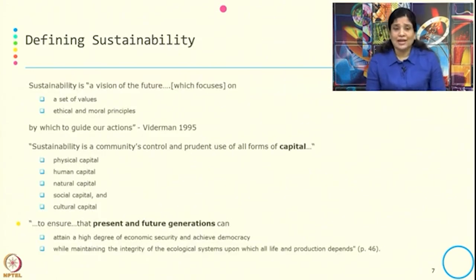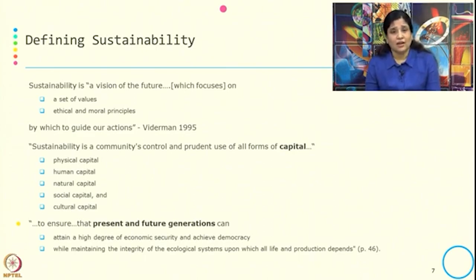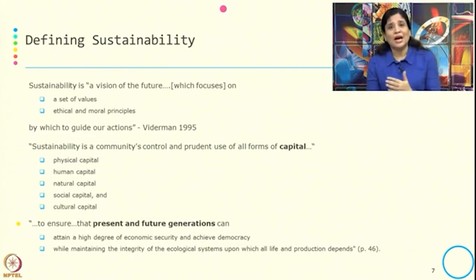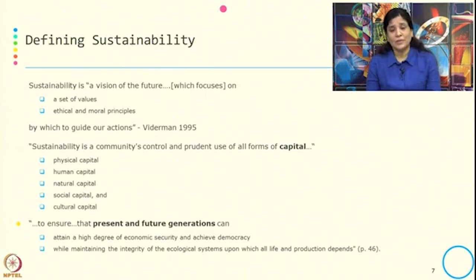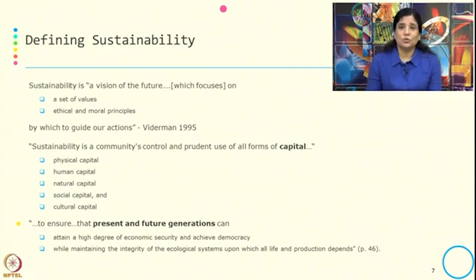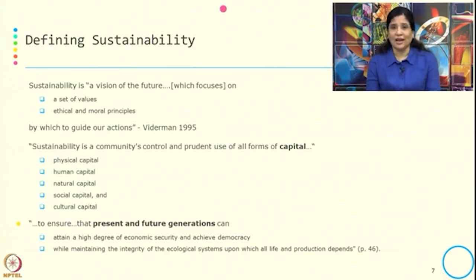Let us now look at how we define sustainability. I have taken a definition from Wiedermann 1995, which says that sustainability is a vision of the future that focuses on two things: a set of values, and ethical and moral principles. At a later point we will see arguments from economists about whether sustainability is ethical or moral. For now, sustainability is a vision of the future guided by a set of values and ethical and moral principles that guide our actions.